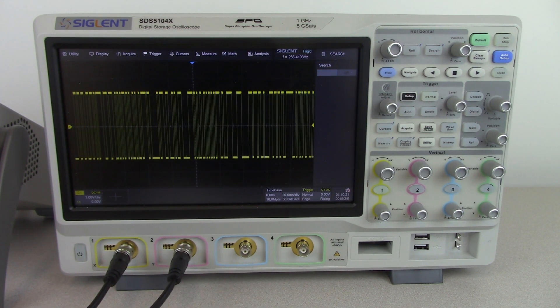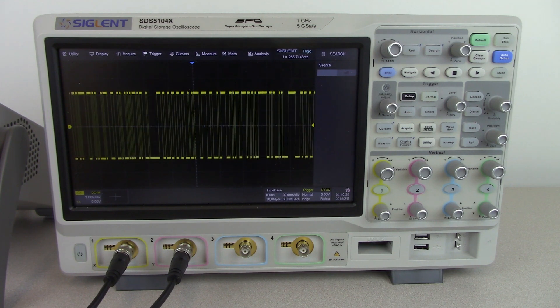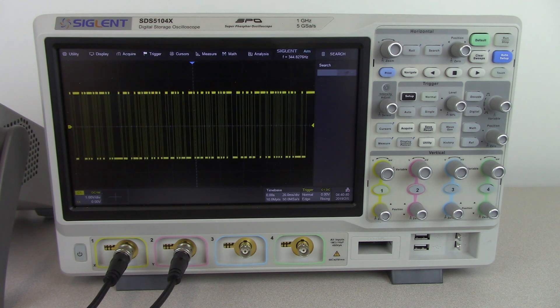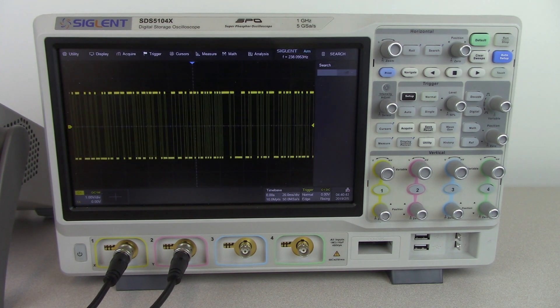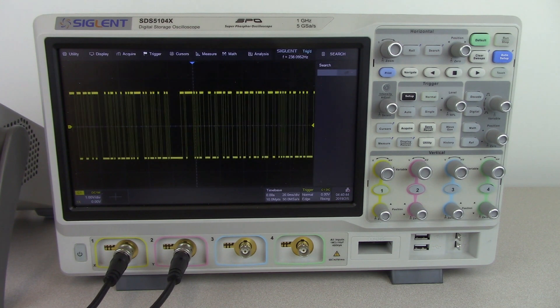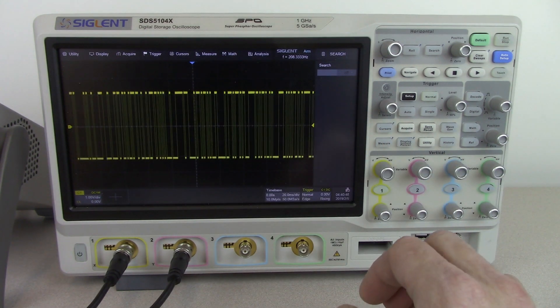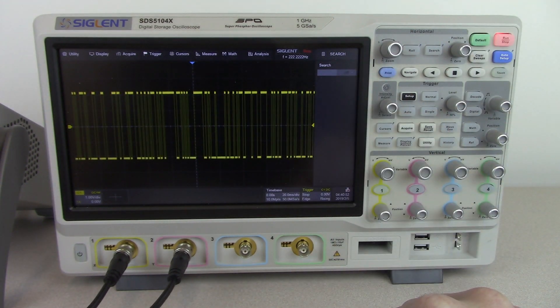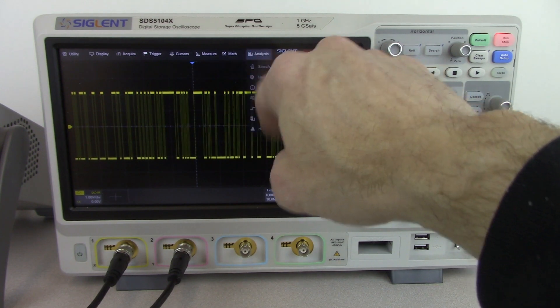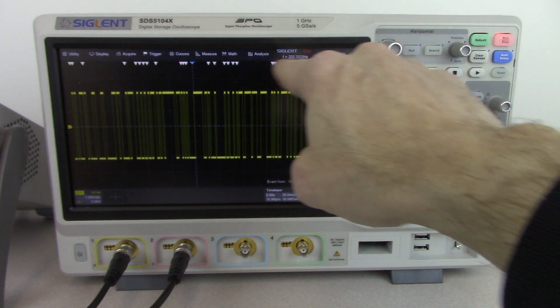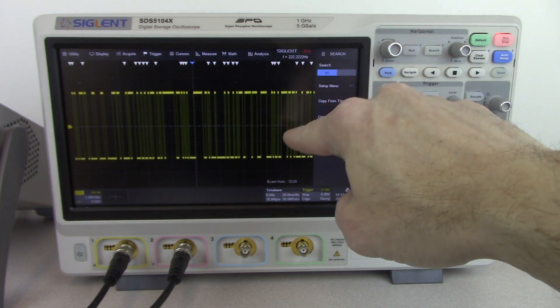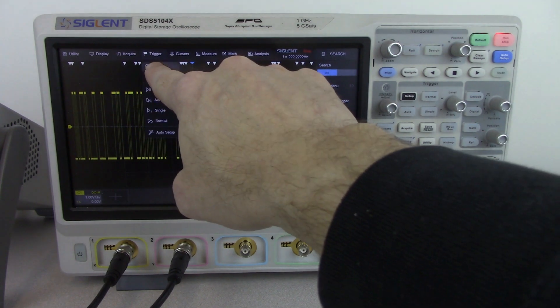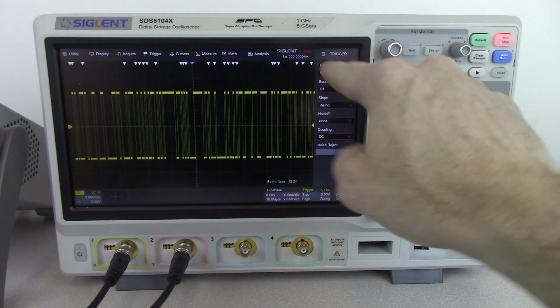The next function I would like to explain in more detail is the search function. The search function is very similar to a secondary set of trigger conditions that we want to apply to a collected set of data. In order to visualize that, I've got that PRBS or pseudorandom bit sequence. Now I'm going to select single just to freeze the image on the display and freeze that data in memory. I'm going to go up to analysis and hit search. Now you'll notice that all of these small white triangles have appeared. I'll go back and show you the trigger menu.